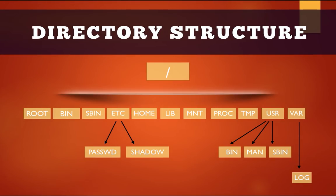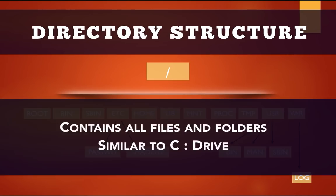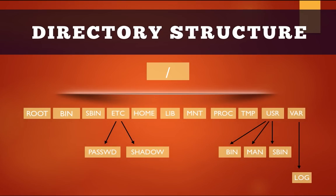Now let's first understand the basic directory structure of Linux. At the top of the hierarchy we have the root directory, denoted by backslash. It contains all the files and folders that are there in the computer, similar to the C drive that you find in the Windows environment. Under the root directory you have several subdirectories.